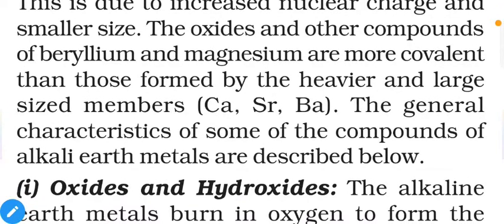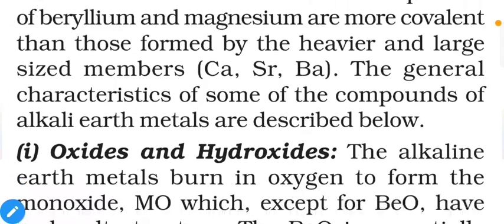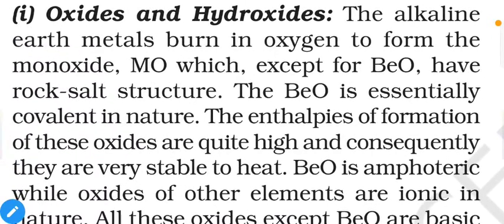The general characteristics of some compounds of alkaline earth metals are described below. First, oxides and hydroxides: alkaline earth metals burn in oxygen to form monoxide. Except for BeO, which has a rock salt structure, BeO is essentially covalent in nature. To get ionic nature, we need a larger difference of electronegativity between the positive and negative elements.